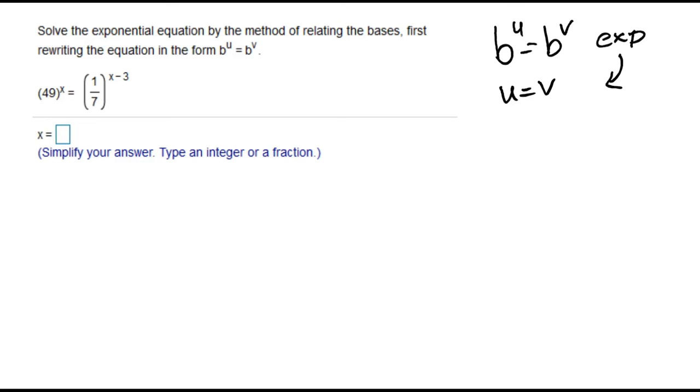Our question is 49 to the x equals 1/7 to the x minus 3. We want to make the base on both sides be the same.